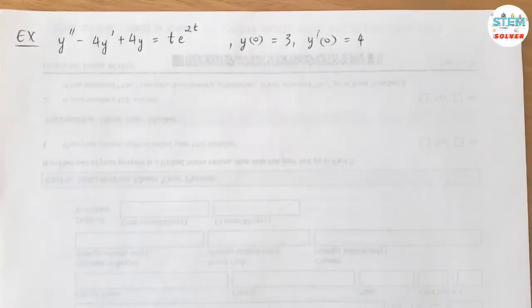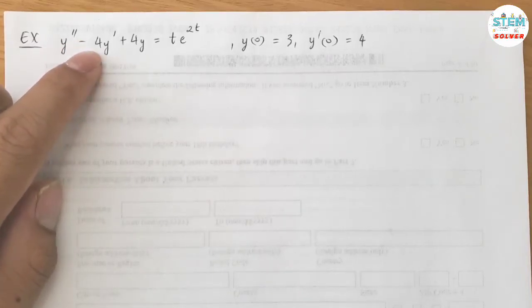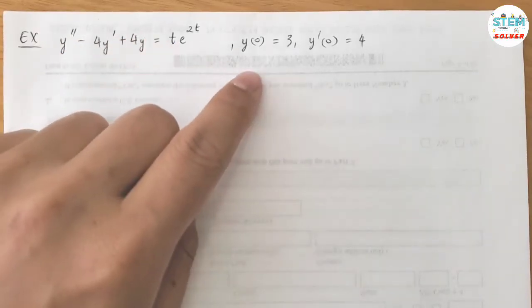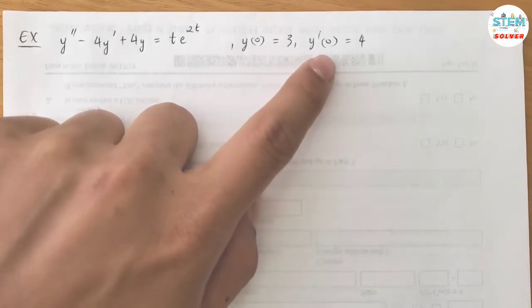Using the Laplace transform to solve the initial value problem y double prime minus 4y prime plus 4y equals t times e to the 2t, and you are given the conditions which are y of 0 equals 3 and y prime of 0 equals 4.